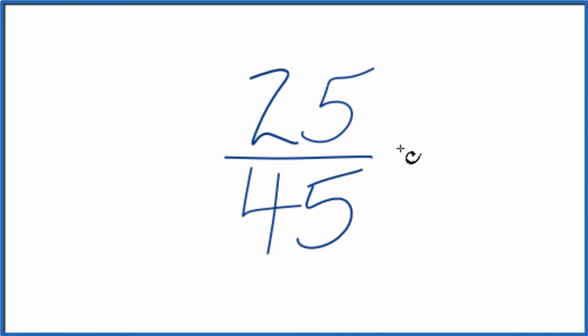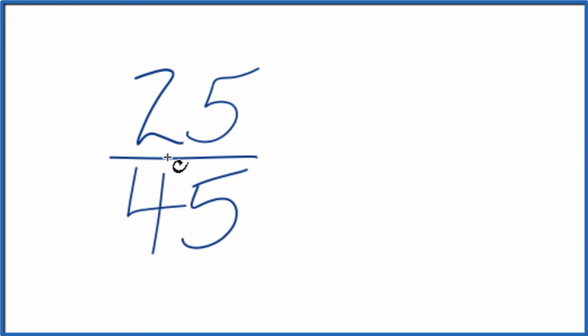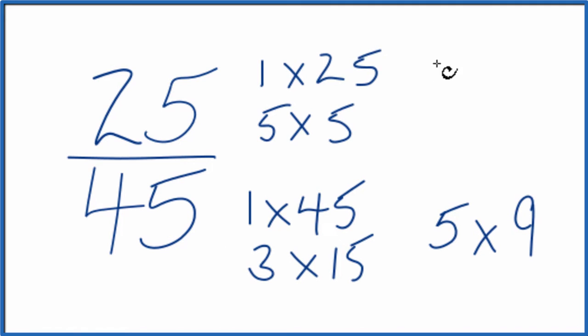Let's find the factors for 25 and 45. So these are the factors of 25, and then 45. We want to find the greatest common factor, and it looks like 5. Five is going to be the greatest common factor.